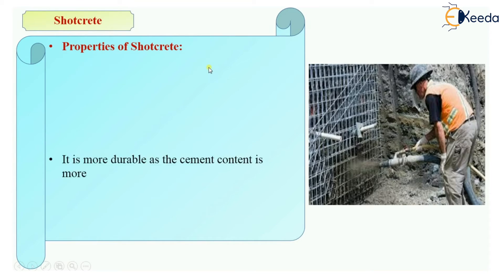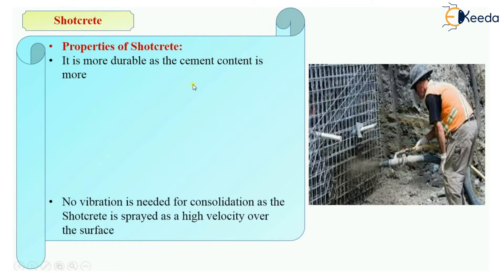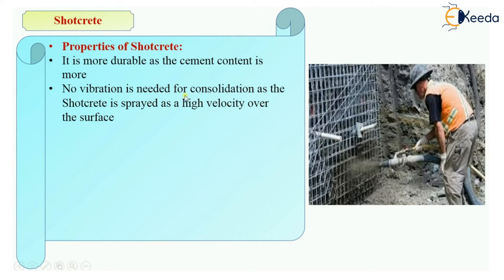Now let's look at the properties of shotcrete. It is more durable because more cement content is used — all the concrete is properly lubricated with cement paste, so more water and cement paste are added to make it more durable. No vibration is needed; the concrete is directly consolidated into the formwork and spread at high velocity over the surface, so no special vibration process is required.